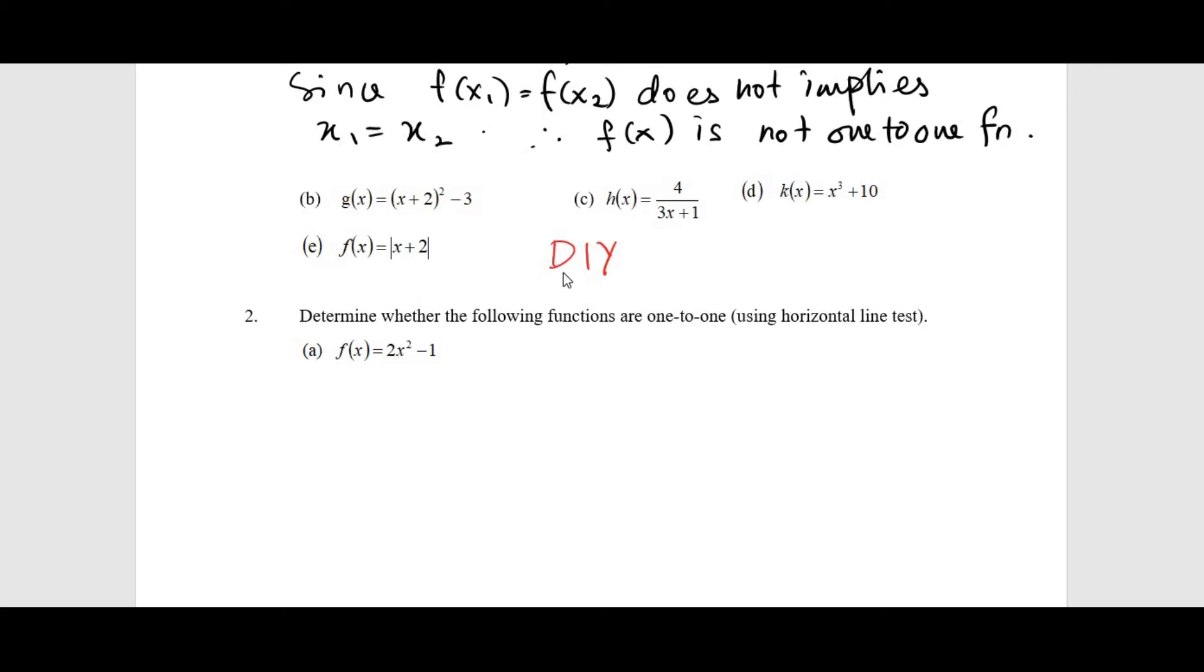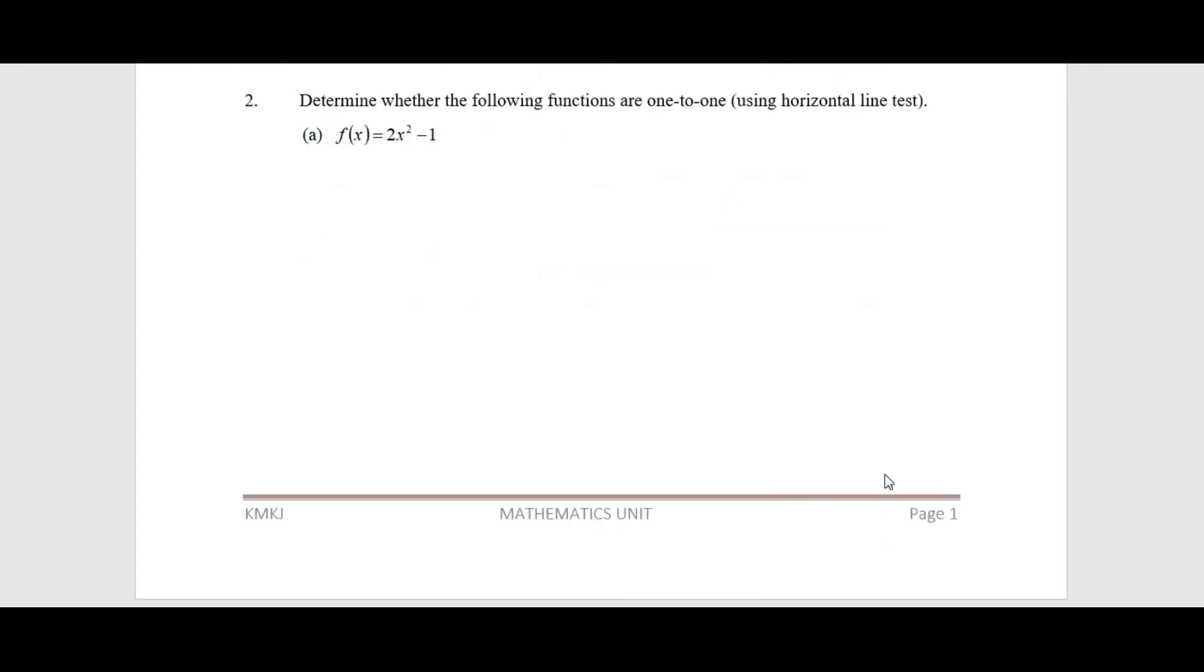Now let's look at another example. You are given f(x) = 2x² - 1. We want to determine whether this function is one-to-one function by using horizontal line test.